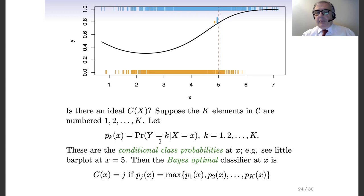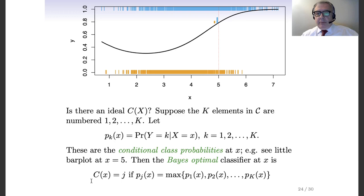If we knew these conditional class probabilities, then we can easily find the optimal classifier. The Bayes optimal classifier is just the classifier that looks at the conditional class probabilities and selects the one that gives the maximum value. We consider the different classes; for each class we know the probability conditional on our observation vector, and it is quite natural that we select the most probable class. The Bayes optimal classifier sets c(x) equal to j if p_j(x) is the maximal conditional class probability among the K ones.